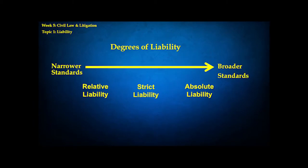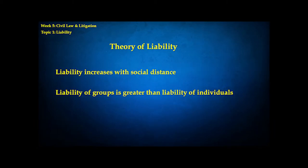Think of this in terms of degrees of liability: relative liability being at the narrow end, strict being somewhat broader, and absolute liability being broader still. Black built on his earlier theory of law with a theory of liability. One idea is that liability increases with social distance — the greater the relational and cultural distance between the parties in a conflict, the more likely they are to use a broad standard of liability, which partly explains collective liability in inter-ethnic conflict. Another idea is that the liability of groups is greater than that of individuals — liability increases with organization. If the alleged offender is an organization, they tend to be held to broader standards of liability, which is one reason we see broad standards in corporate law.